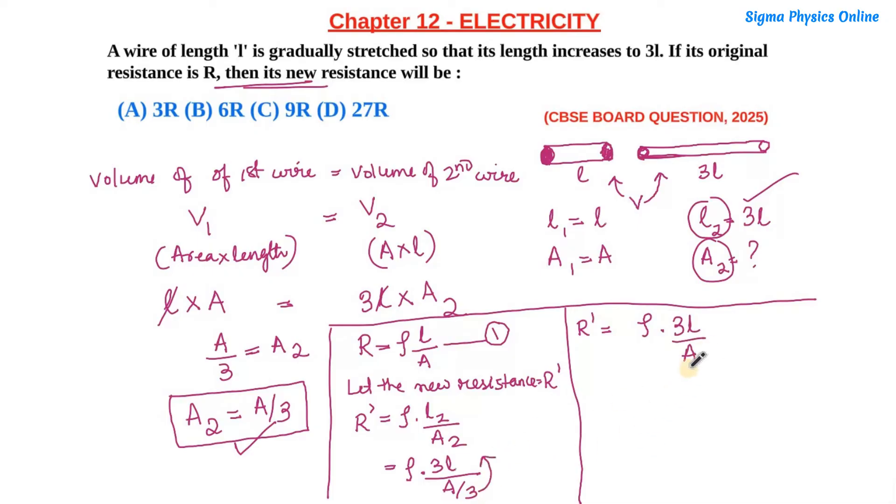Taking the constant out, we get 9 × ρl/A. Now, what is ρl/A? It is nothing but our original resistance R from equation 1.